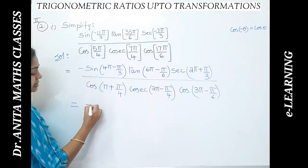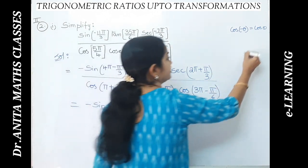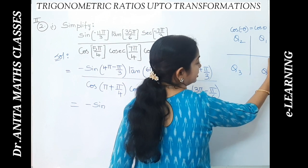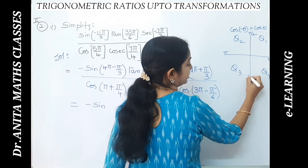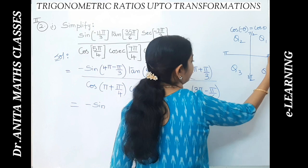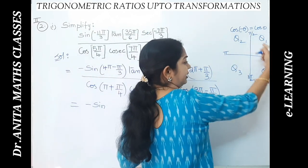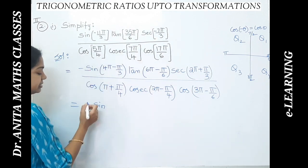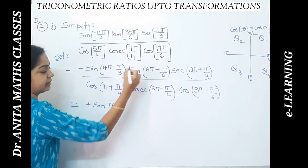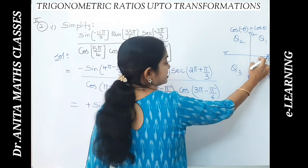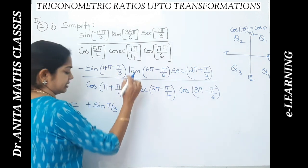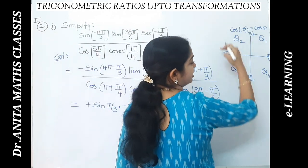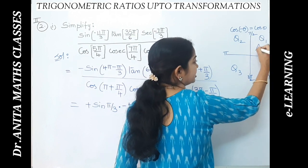Now minus sine of 4π — 4π means 2 revolutions. Looking at the quadrant system: 0, π/2, π, 3π/2, 2π is one complete revolution. So 4π minus π/3 falls in the fourth quadrant; in the fourth quadrant sine is negative, so minus times minus gives plus sine(π/3). For tan of 6π — three revolutions minus π/6 — it comes to the fourth quadrant where cos is positive but tan is negative, so minus tan(π/6). Secant of 2π plus π/3: one revolution plus π/3 is in the first quadrant — all are positive.